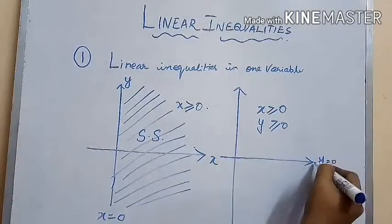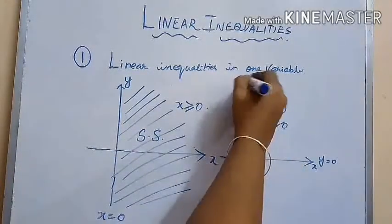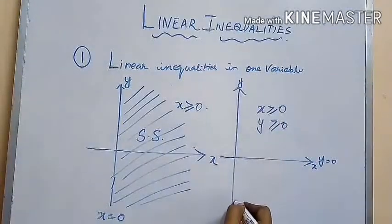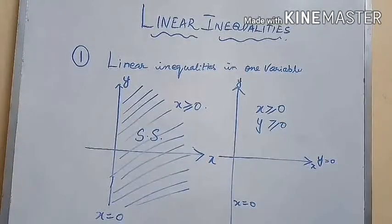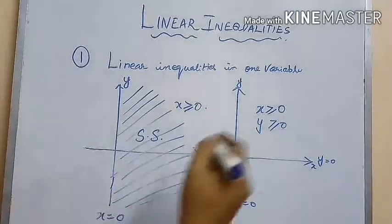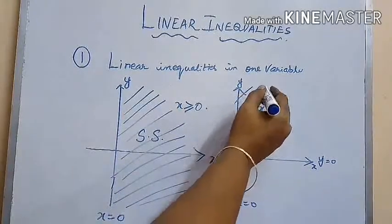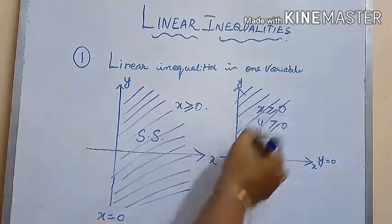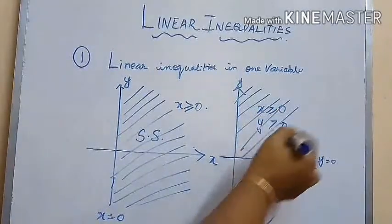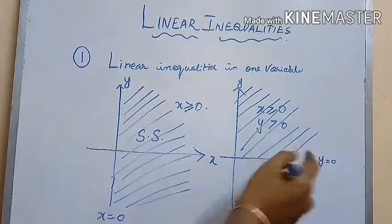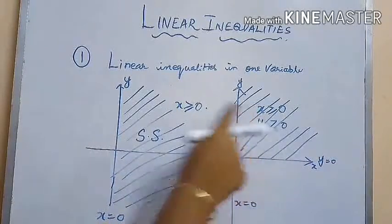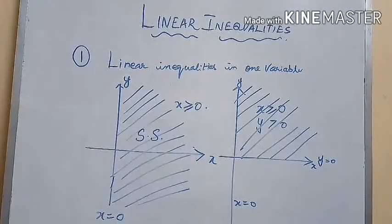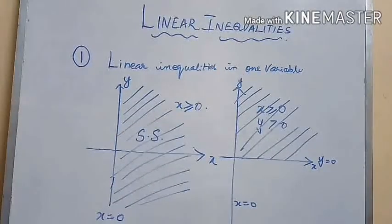The line Y is equal to zero — that is, the X-axis represents Y equals zero, and the Y-axis represents X equals zero. Since the inequality is greater than or equal to, the first quadrant represents X greater than or equal to zero and Y greater than or equal to zero.